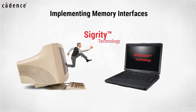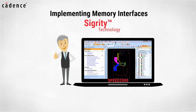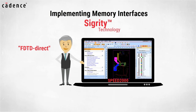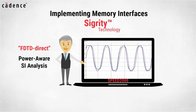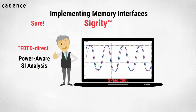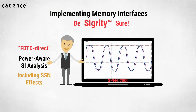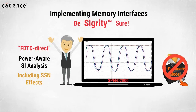With Sigrity, SI engineers have an alternative method. Our FDTD direct simulation methodology calls our unique hybrid solver in combination with our finite difference time domain, or FDTD, engine, which solves PCB and package geometries directly and performs power-aware SI analysis in the time domain without S-parameters. Signal integrity engineers can confidently and accurately perform their detailed SI analysis, including SSN effects, without having to process large, complex S-parameters.